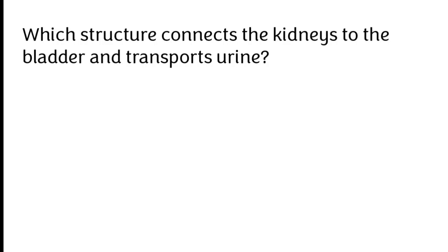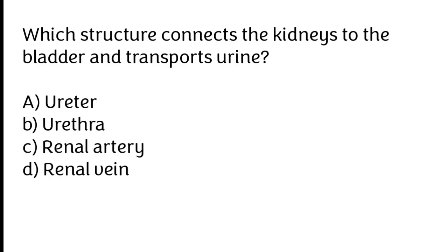Which structure connects the kidney to the bladder and transports urine? A) Ureter, B) urethra, C) renal artery, D) renal vein.